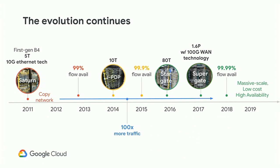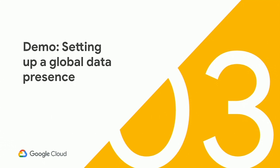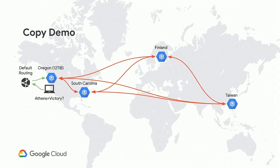1.6 petabits per second is pretty bonkers. So we learned about how the software-defined network and all this fiber — some that we own, some that we share — allows us to have the scale, cost-effectiveness, and availability to provide data locality around the world for a solution like Bigtable. So now we're going to go back to Doug — let's pray to the demo gods and see how we're doing.